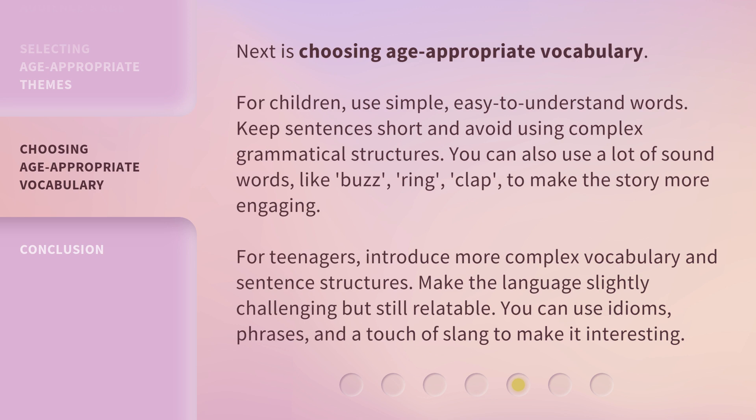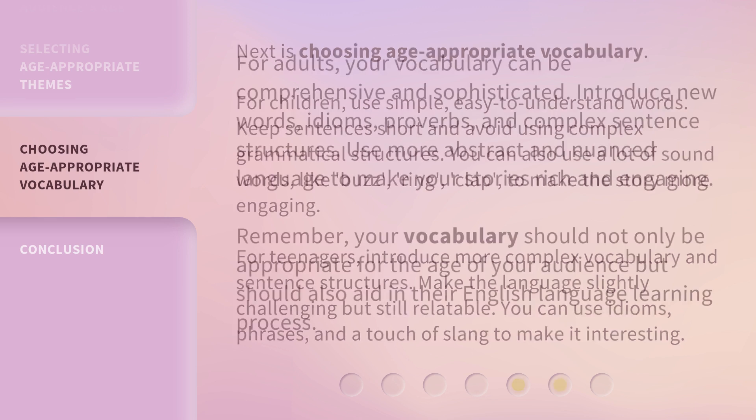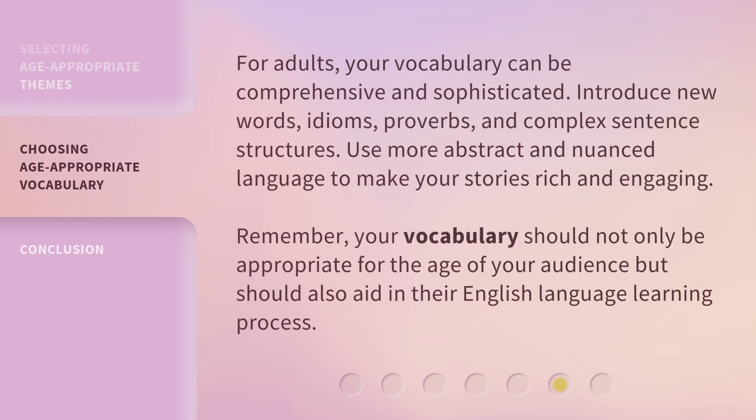Make the language slightly challenging but still relatable. You can use idioms, phrases, and a touch of slang to make it interesting. For adults, your vocabulary can be comprehensive and sophisticated. Introduce new words, idioms, proverbs, and complex sentence structures. Use more abstract and nuanced language to make your stories rich and engaging. Remember, your vocabulary should not only be appropriate for the age of your audience but should also aid in their English language learning process.